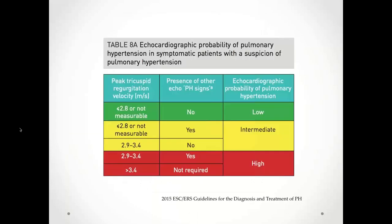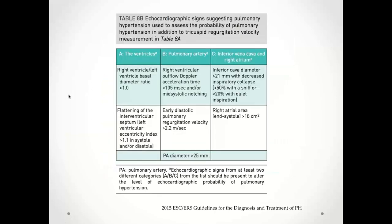What exactly do they mean by 'other echo signs of PH'? They break it down anatomically into three categories: ventricles (A), pulmonary artery (B), and IVC and right atrium (C). In order to say there are other features of pulmonary hypertension, you need at least one sign from two separate categories.